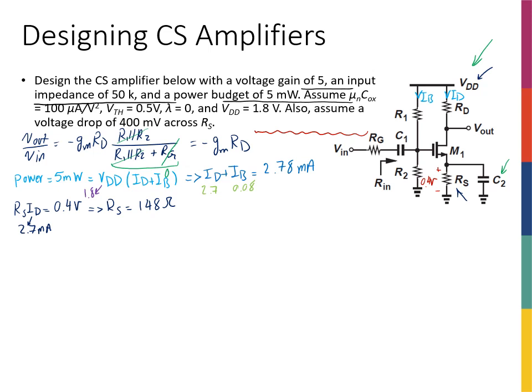From the gain requirement: |gm·RD| = 5. Since gm = 2·ID / (VGS − Vth), substituting ID = 2.7 mA and Vth = 0.5 V gives: RD / (VGS − Vth) = 5 / 5.4 mA ≈ 926 Ω/V. Now both VGS and RD need to be decided.